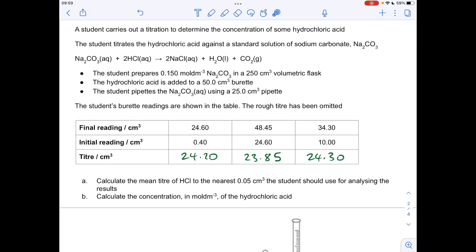To work out the mean titra, we need to establish if the results are all concordant or not. You can see that this one here isn't concordant—it's not within 0.10 of the others—whereas these two are, so they are the concordant results.